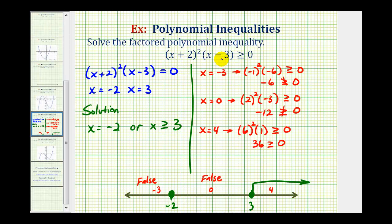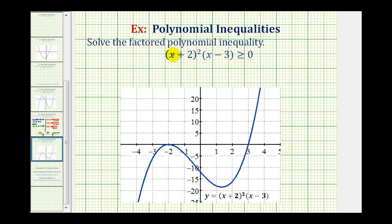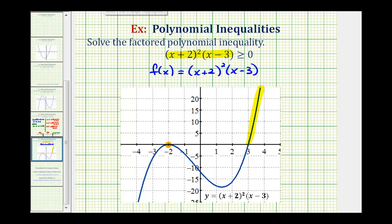Now let's discuss how we could have solved this graphically. To determine when f(x) = (x + 2)² × (x − 3) is greater than or equal to zero, we look for where the function is on or above the x-axis. The function touches the x-axis at x = −2, and is on or above the x-axis when x ≥ 3. These x values represent the solution to the original inequality.